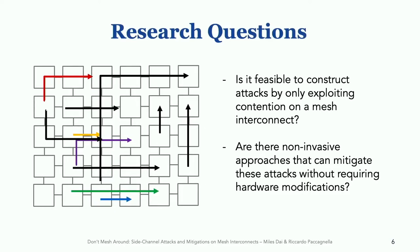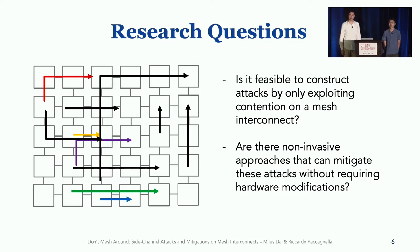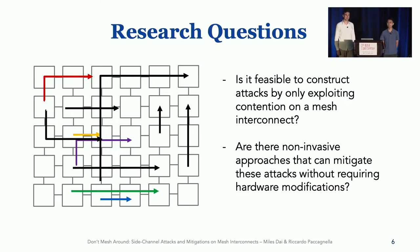In light of this complexity, we asked two research questions. First, is it feasible to construct attacks by only exploiting contention on a mesh interconnect? And second, are there non-invasive approaches that can mitigate these attacks without requiring hardware modifications? In our work, we find that not only are such side channels feasible, but also that despite the deeply integrated nature of the interconnect, it is in fact possible to reduce this leakage without changing any hardware.